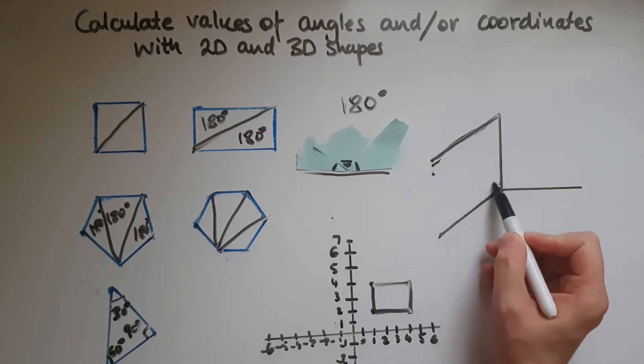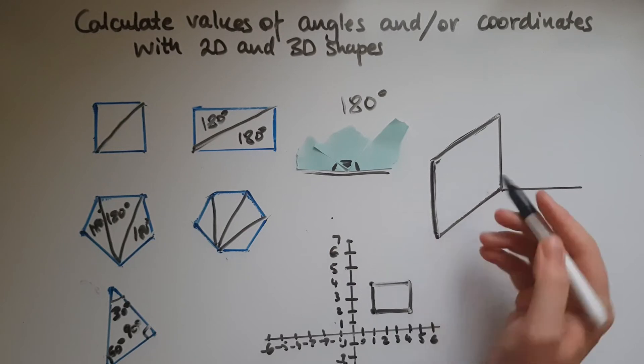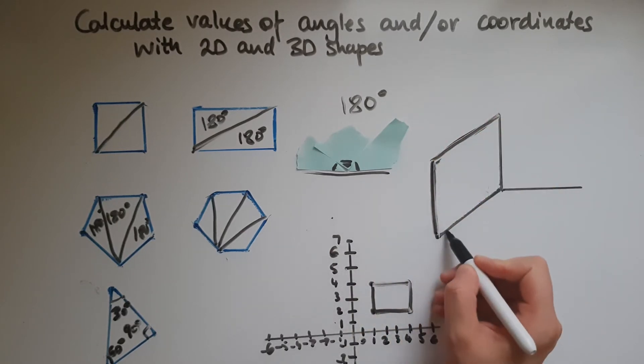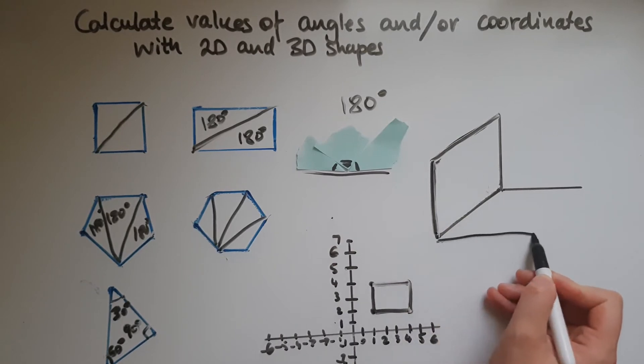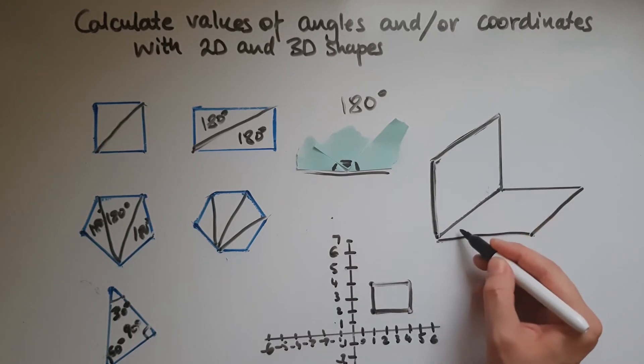So this is going to be 90 degrees and this is going to be 90 degrees and this is going to be 90 and so on. Although it doesn't look like it, that's what it's going to be like. And this is going to be parallel to this one. And this is going to be 90 degrees, 90 degrees and so on. So again, we extend this to make it parallel to the other side. And this is parallel to this side.